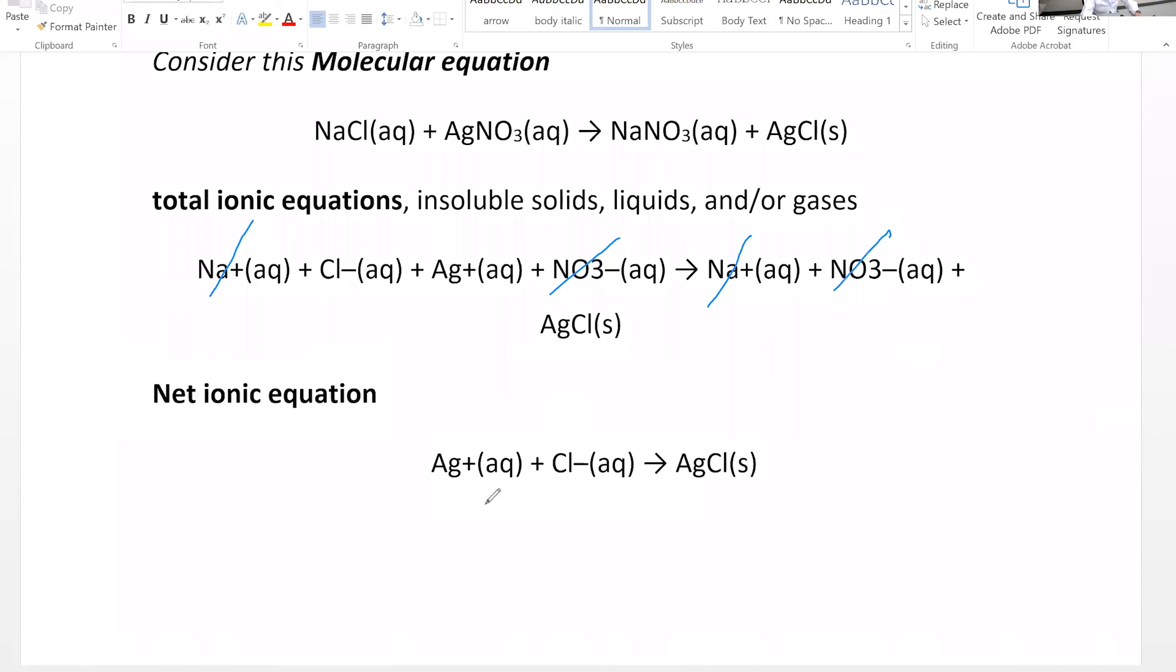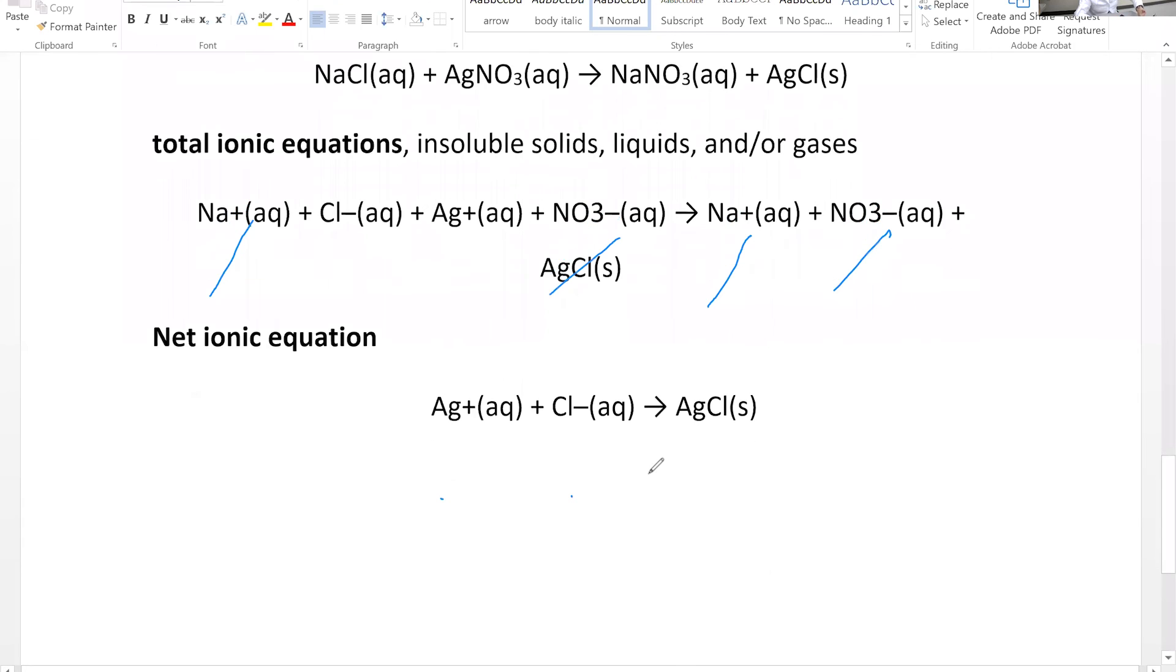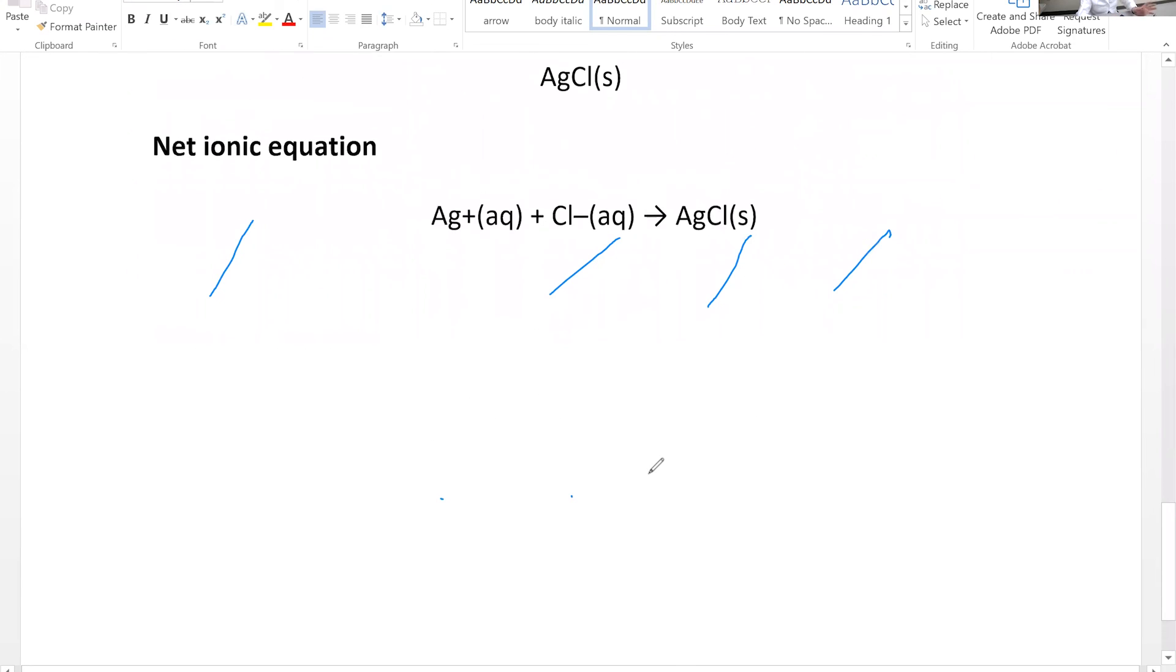What is left? Silver ion, chloride ion gives silver chloride. This is the net ionic equation. And that's going to help you to answer the questions in the pre-lab and also for your data sheet.